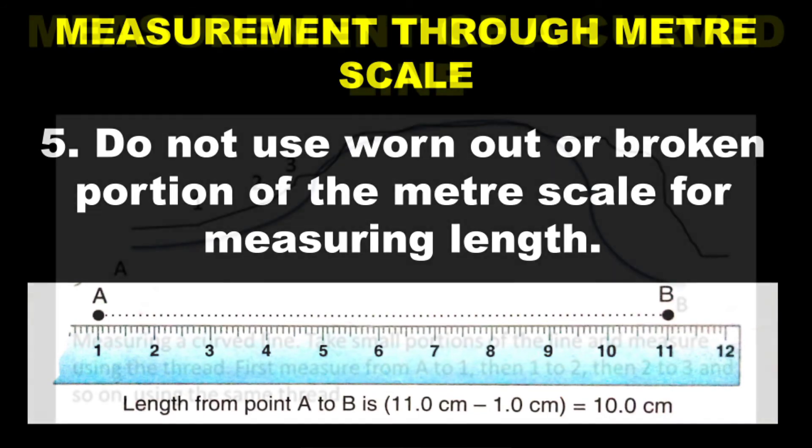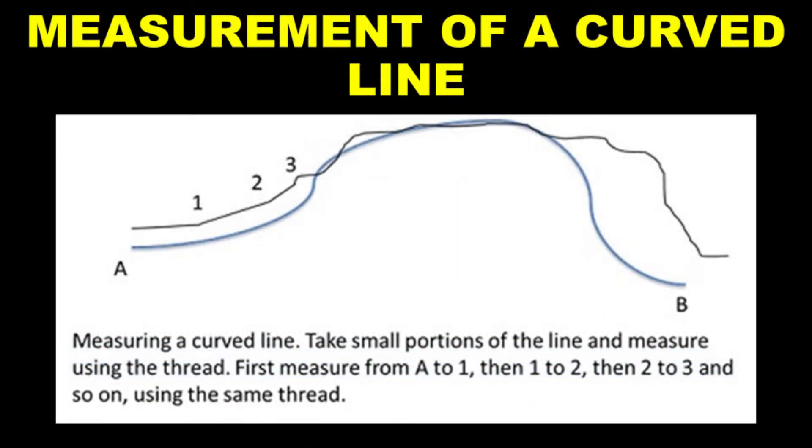Then another thing, we also measure with thread. You take a thread and measure it. If there's any curved line, you put the thread on it and hold it with the other hand. And then what you do, you straighten the thread and just read the reading in the scale. By that you can easily take the correct reading by the help of the thread.